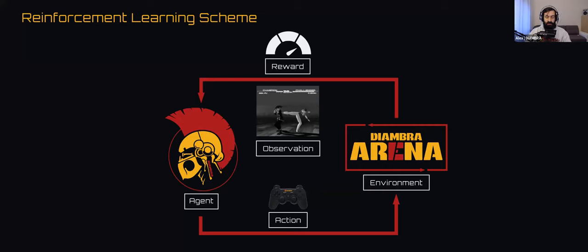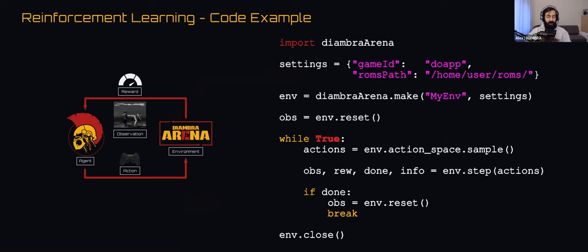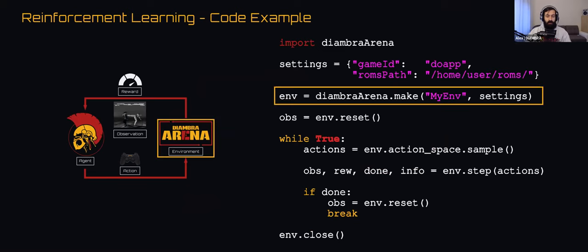A simple starting code for reinforcement learning looks like this: create the environment by initializing it with a given set of settings — for example, specifying you'll use Dead or Alive Plus Plus. Then reset the environment, which returns the initial observation at the very early stages of the round. After that, start the interaction loop where the agent selects actions to send to the environment.